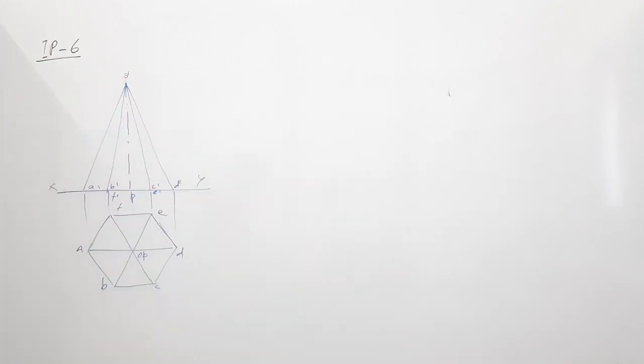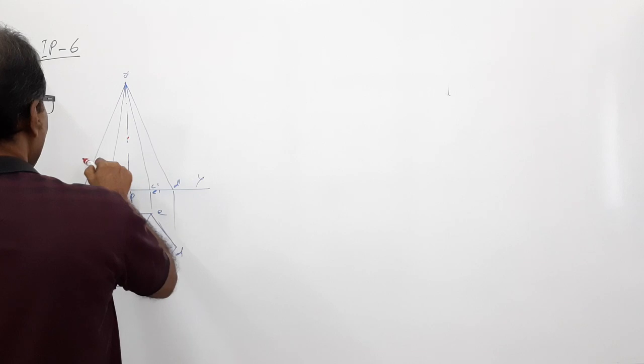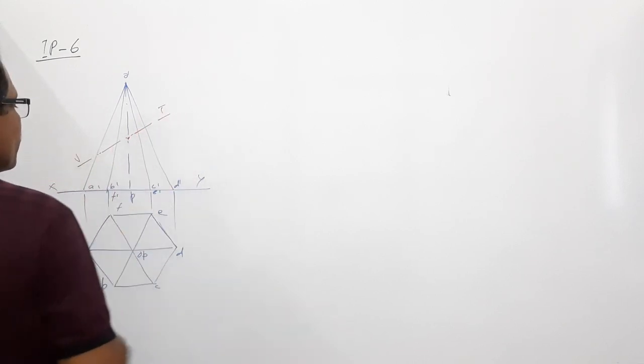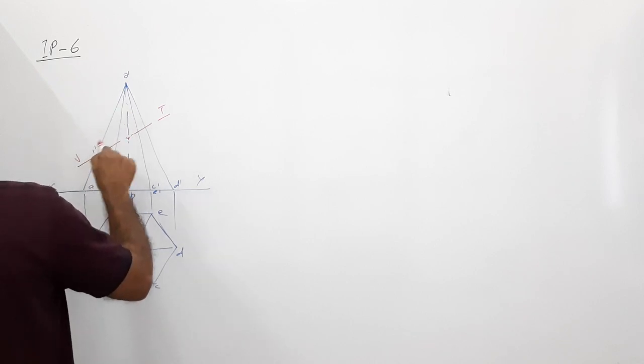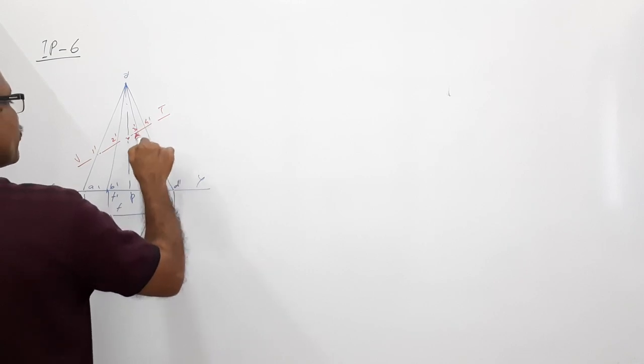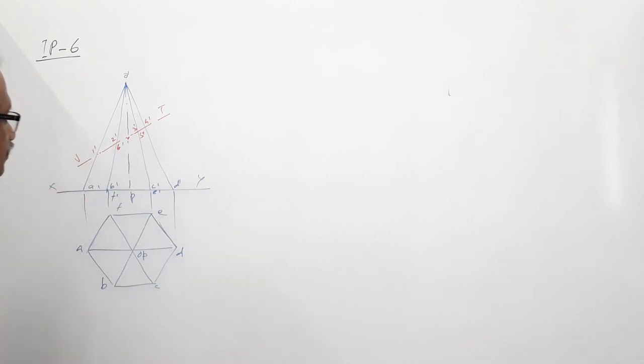Now we have to cut it. This is the center of the axis, and this is the cutting plane. Where does it cut? AO at 1 dash, BO at 2 dash, CO at 3 dash, DO at 4 dash, EO at 5 dash, and FO at 6 dash.